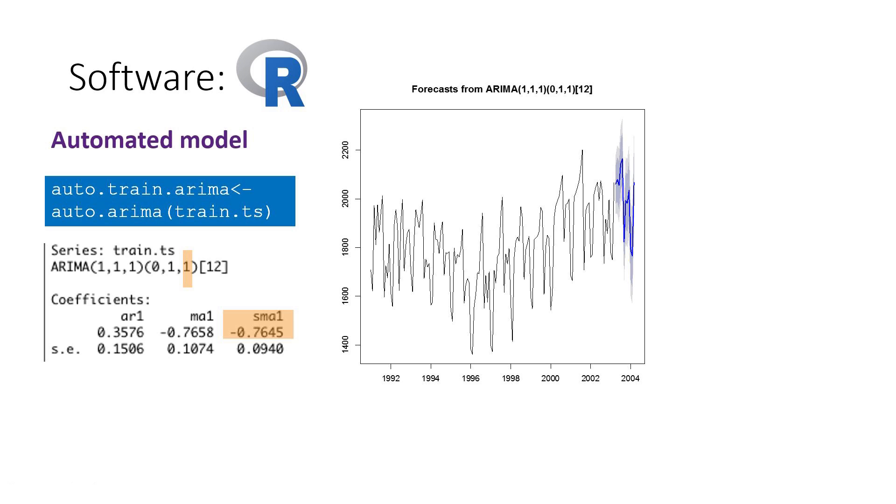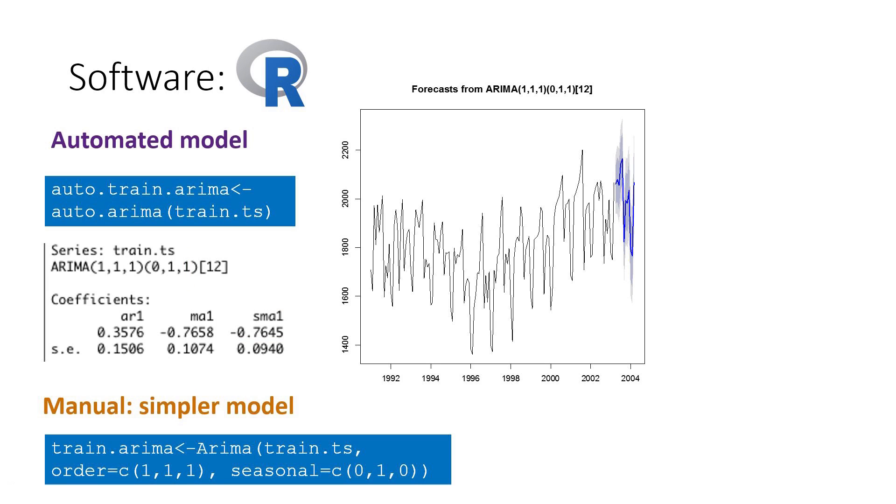The time plot shows the forecast as well as the prediction intervals for this selected model. We can also try to manually fit a simpler model, such as by dropping the seasonal term. This can be done with the ARIMA function.